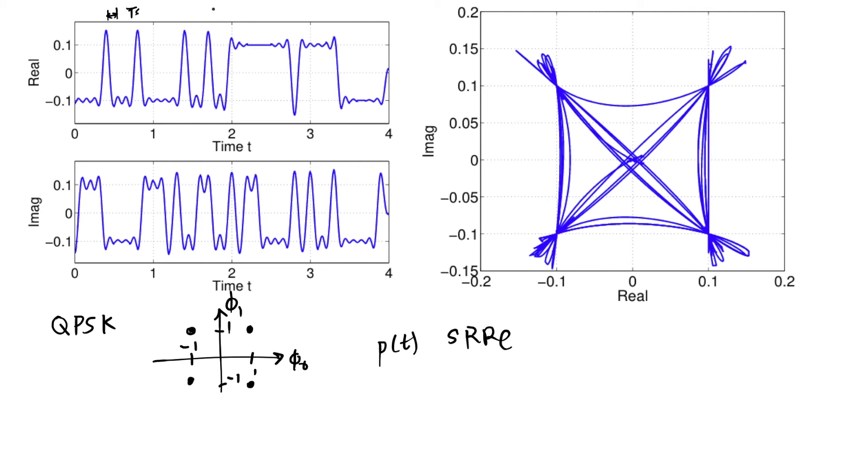That's the time signal for S of T and in particular the complex baseband part, the real and imaginary part. You don't see a sinusoid multiplying this signal, you just see the real and imaginary part of the complex baseband signal. But you can imagine the true time domain signal would have that cosine that would be going up and down very very quickly here and making this very hard to look at.